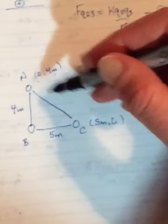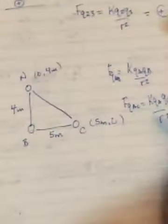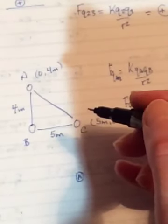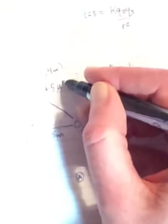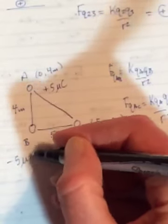So once you have both of those then draw in on A what they're doing. So if I do it down here, if this is A then B, A was charge A is positive five micro coulombs, B was negative five micro coulombs.